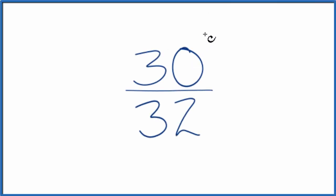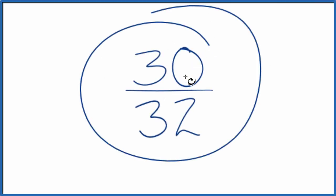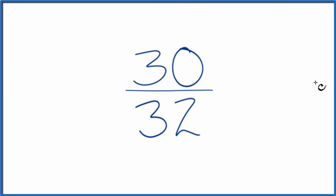If you're asked to simplify the fraction 30/32, here's how we can do that. We're looking for another fraction that's equivalent—it's equal to 30 divided by 32, gets the same value, just that we want to have a different numerator and denominator.